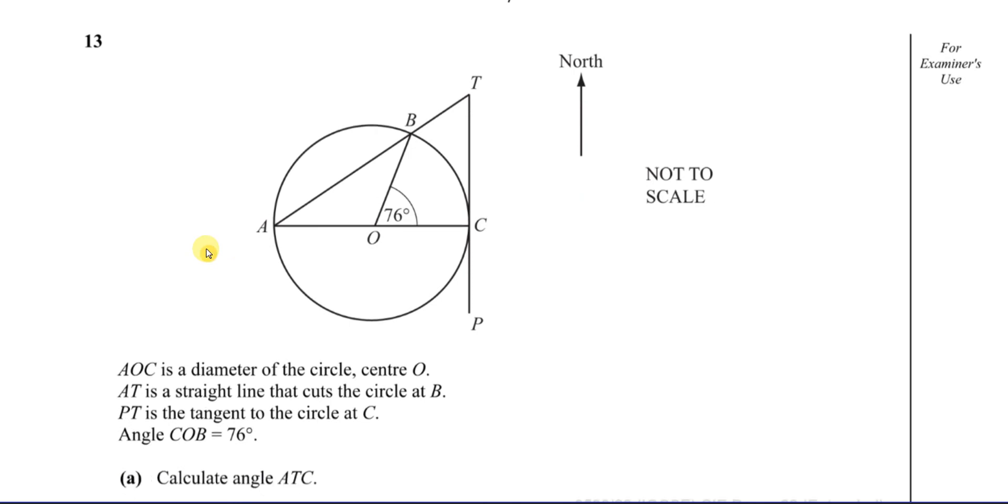We have to find, or they've told us angle COB, as it's marked here, COB is 76 degrees. Calculate the angle ATC, this angle over here. That's what we've got to calculate.